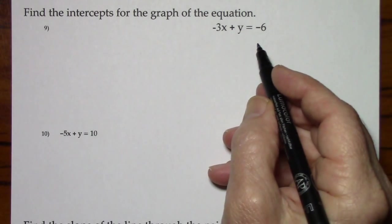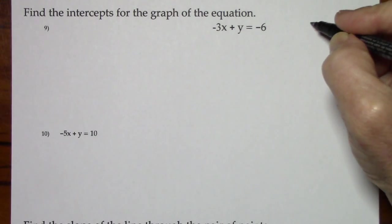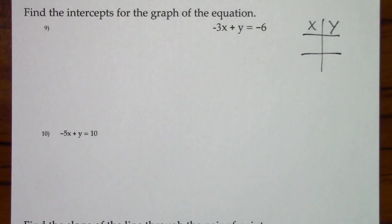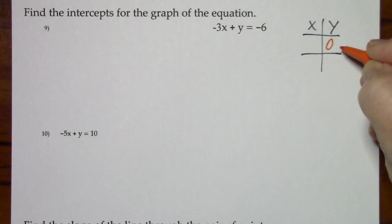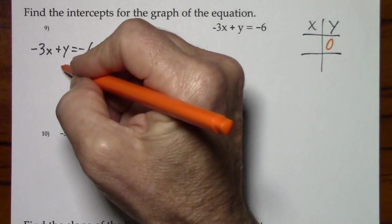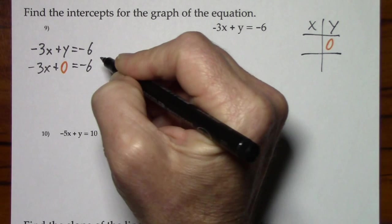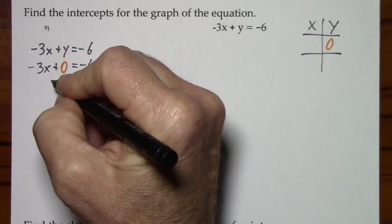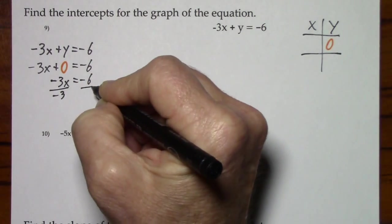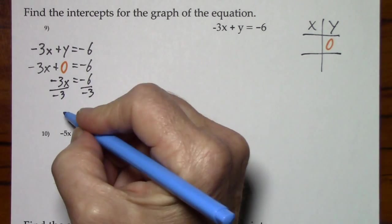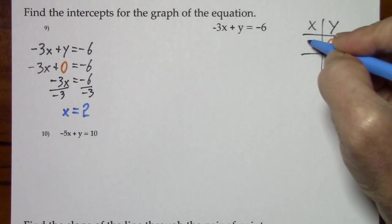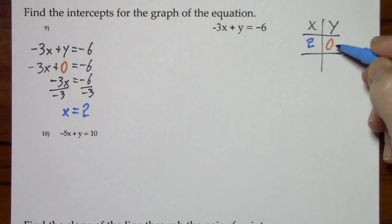Here we're to find the intercepts, but we don't need to graph it. I'll still use an xy chart just to organize my thinking. So when y is 0, we'll find the x-intercept. We get x is 2. So here's our x-intercept.